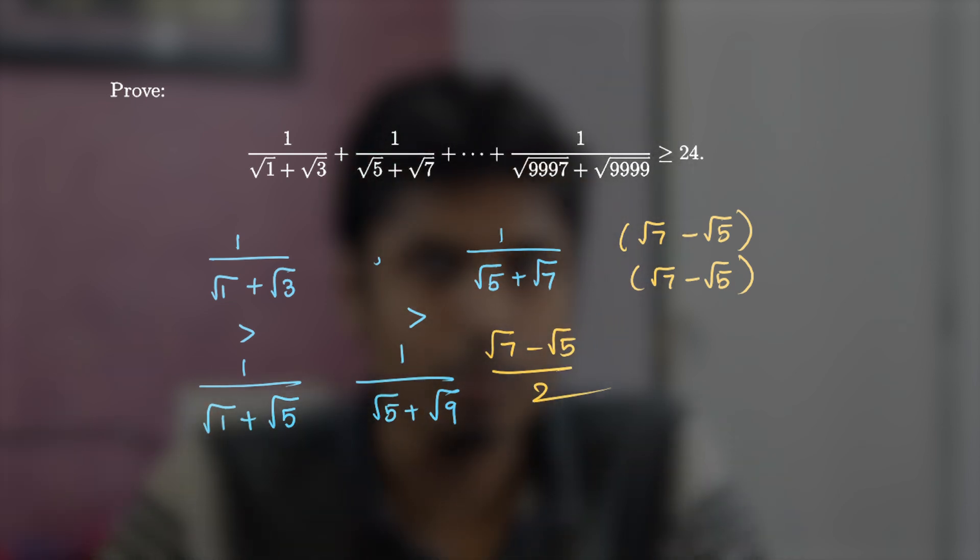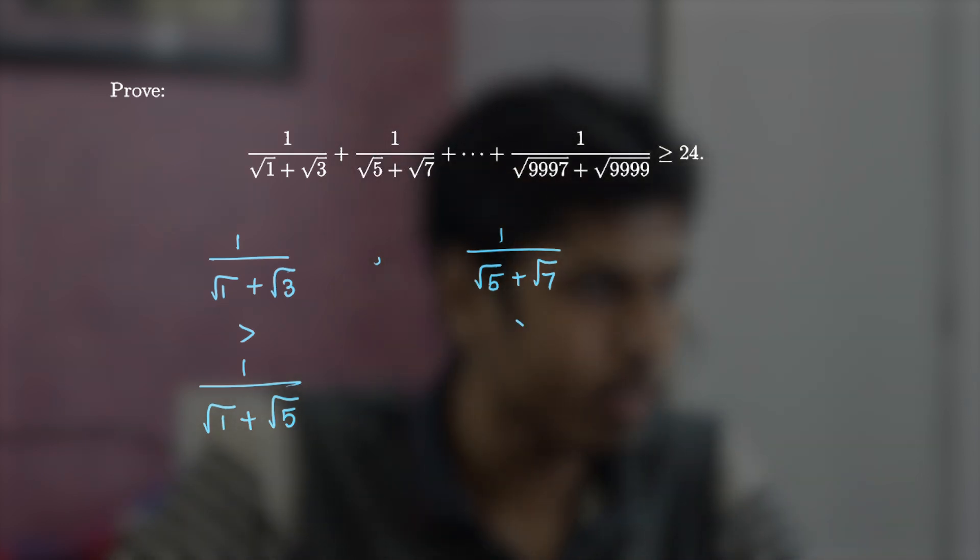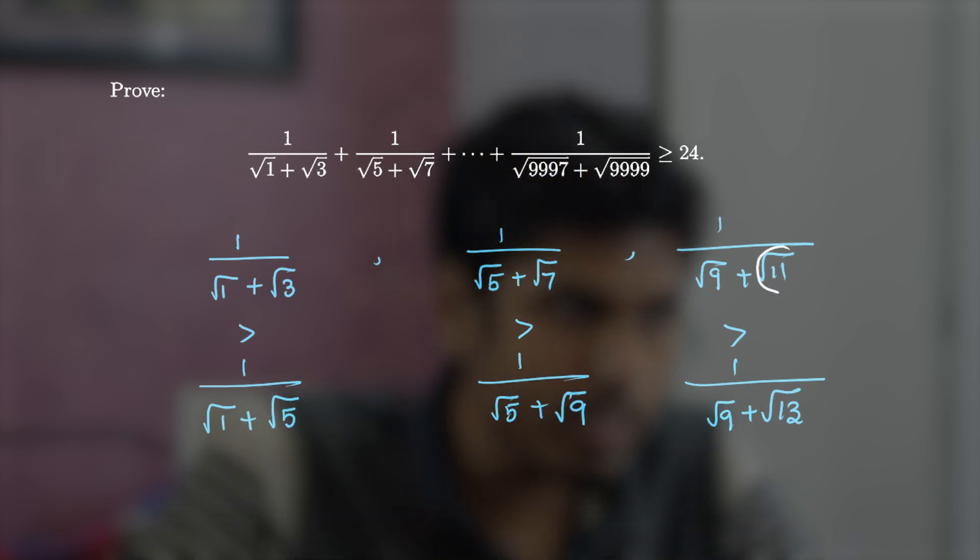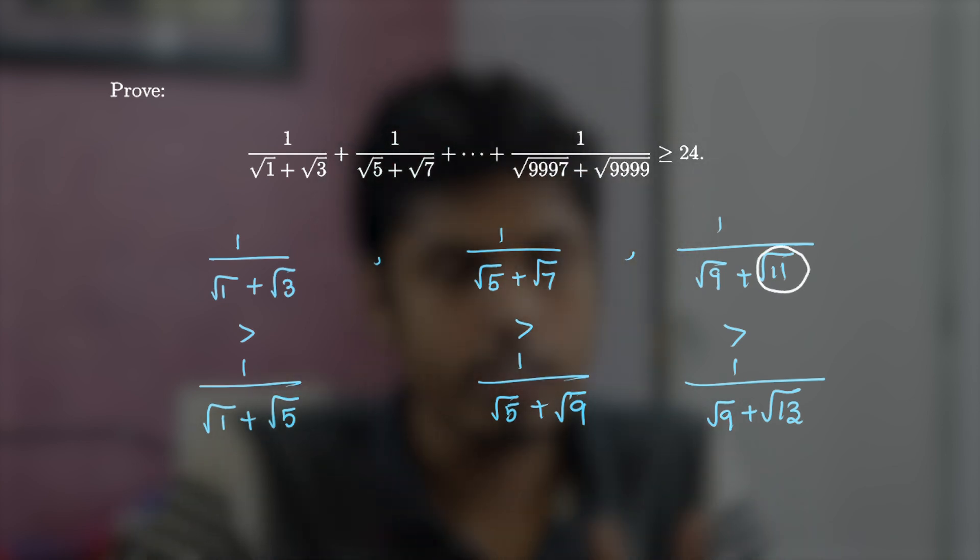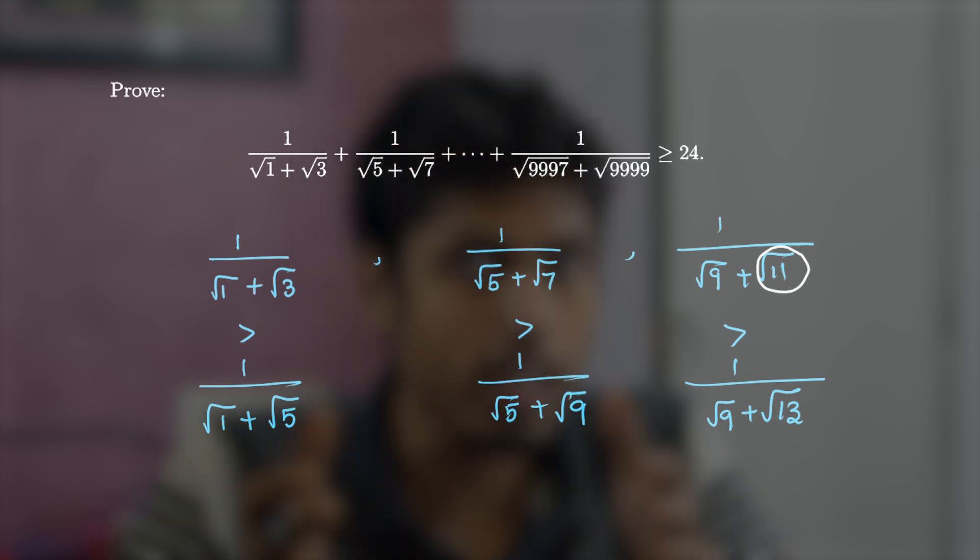This manipulation made telescoping series to be a viable option here. The second term would be greater than 1 by root 5 plus root 9. The idea is simple: we just increase the second term of the denominator by 2. I mean, the number under the root should be increased by 2. This increases the denominator, thereby the total value gets reduced.